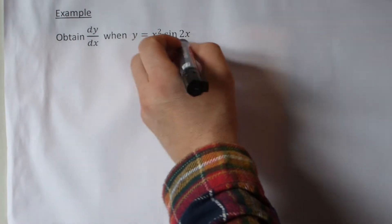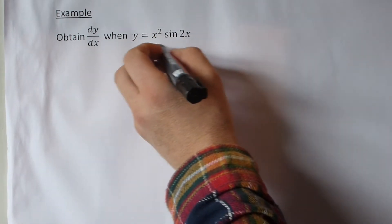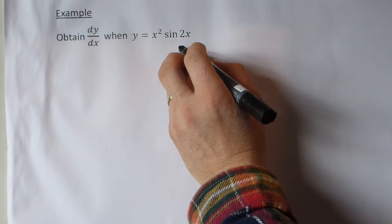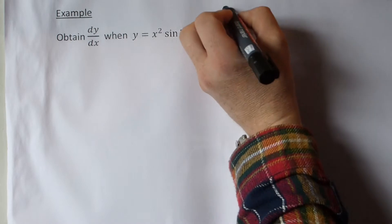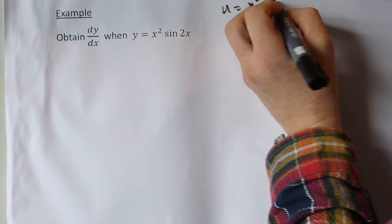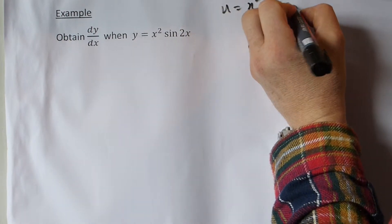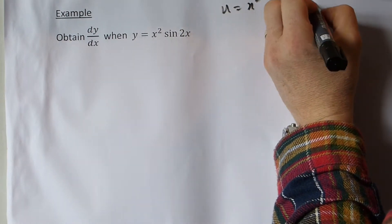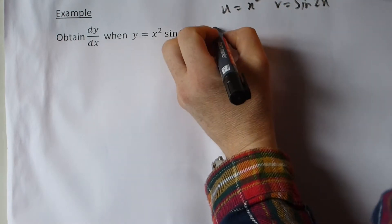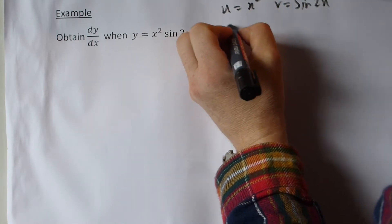Here we've got a product rule. u is equal to x squared, v is equal to sine 2x. The differentiation of u is 2x, the differentiation of v is equal to cos 2x times by 2.